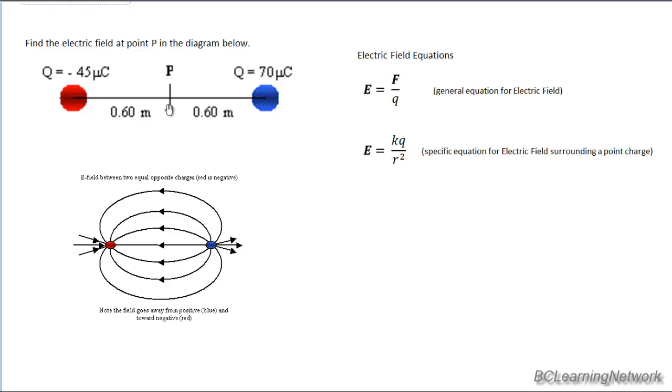So let's do it one at a time. I'm going to use a red arrow to represent the electric field as generated by the red charge, by the negative charge, at point P. We know it always goes away from positive and towards negative, so at point P, it will look like this. So we'll call it E1 because that's charge 1.